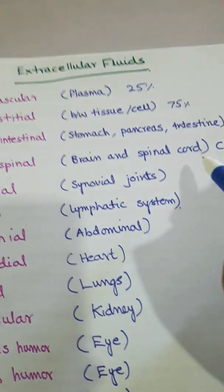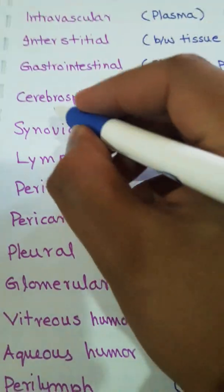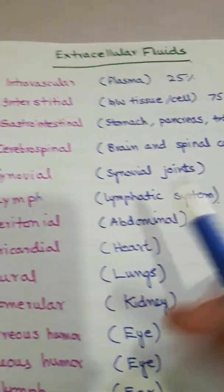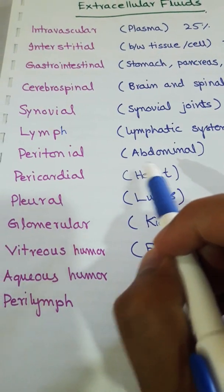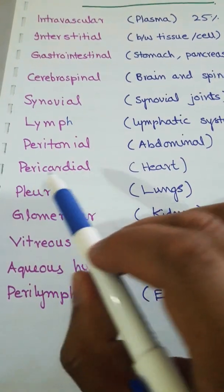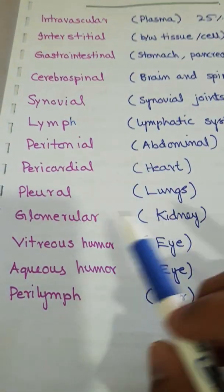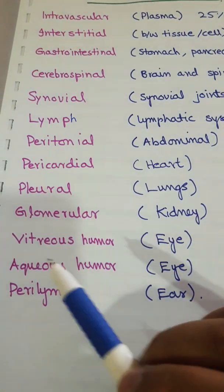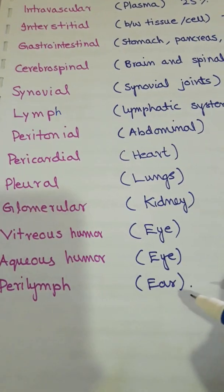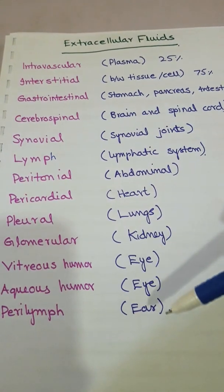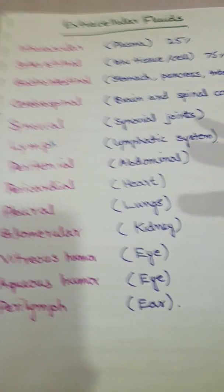Other extracellular fluids include cerebrospinal fluid (CSF) present in the brain and spinal cord; synovial fluid inside joints; lymph in the lymphatic system; peritoneal fluid in the abdomen; pericardial fluid inside the pericardium of the heart; pleural fluid inside the lungs; glomerular fluid inside the kidney; vitreous humor and aqueous humor in the eye; and perilymph in the ear.